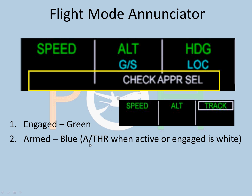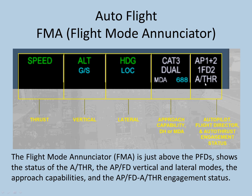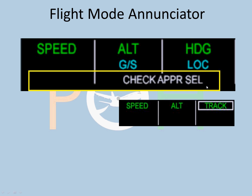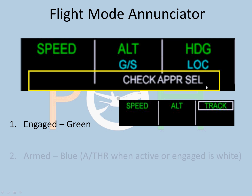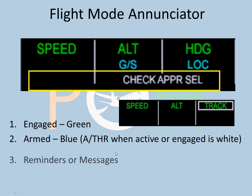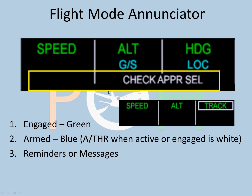An interesting exception is Autothrust — when active or engaged, it is shown in white, as you can see in the previous slide, meaning it is active. The third line is for reminders or messages that need to be given to the pilot — things like 'Check,' 'Approach,' 'Select' — different sorts of reminders or messages will appear on the third line.